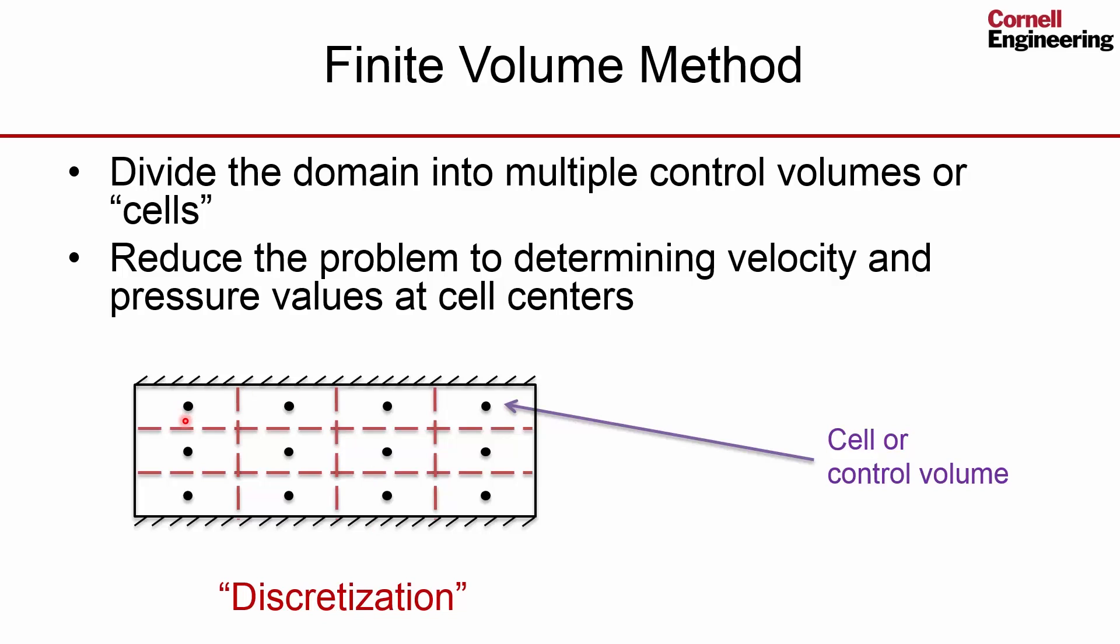Cell center values are approximations of the cell average values. And this particular flavor of the finite volume method is called the cell center finite volume method.